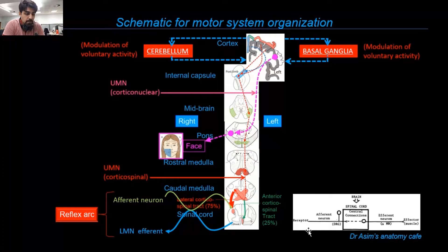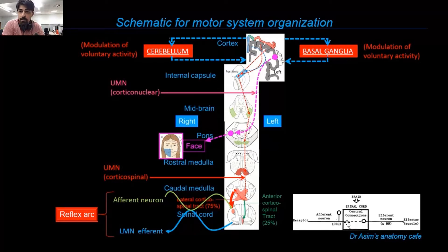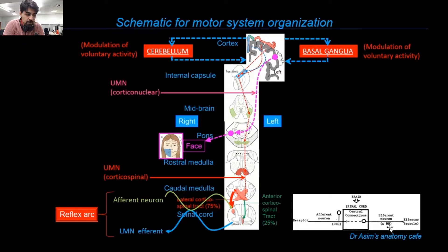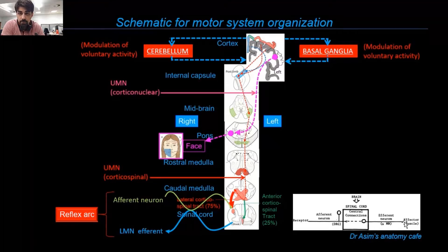Any reflex arc comprises five subcomponents: first, a receptor which receives sensory information from the external environment; second, an afferent or sensory neuron which carries that information towards the central nervous system. Third is the central nervous system itself — any part of the brain or spinal cord — which integrates and analyzes the sensory information. Fourth is the efferent or motor neuron, which carries the motor command from the central integration center to a peripheral body part. The fifth component is the effector organ — a muscle, a gland, or smooth muscle in a vessel wall — which responds by producing muscle contraction, secretion, vasodilatation, or vasoconstriction.